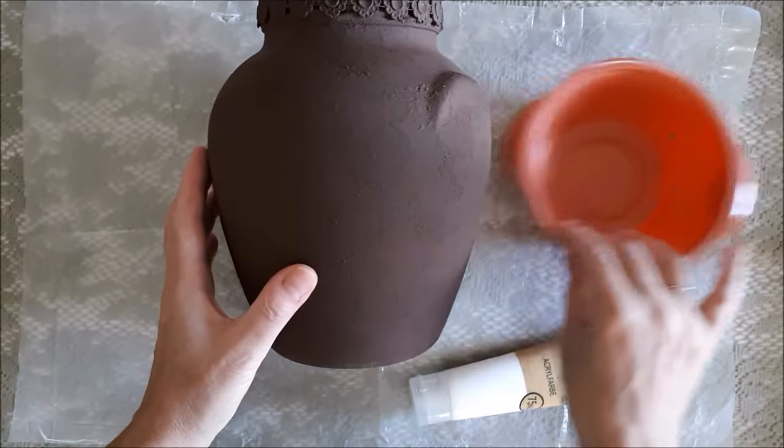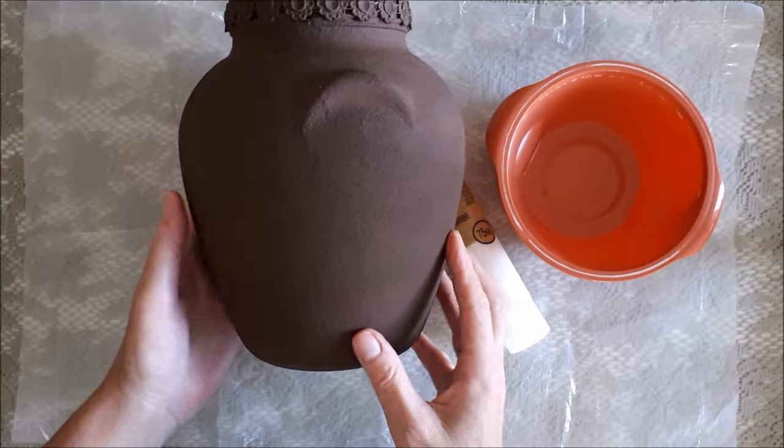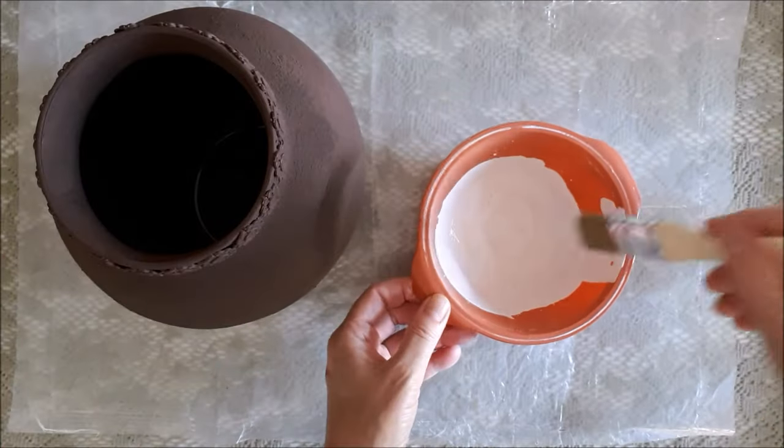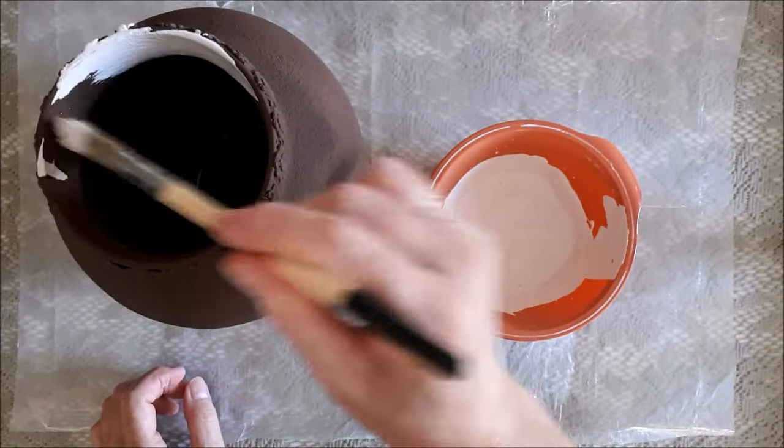It's the next day, my vase is completely dry, so now I'm going to go in with my next color, which is an off-white. This off-white paint is made in the same way as the other paints, and I'm just going to go all over the vase.